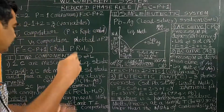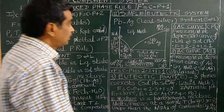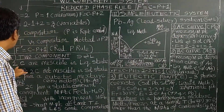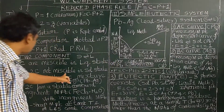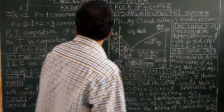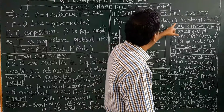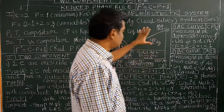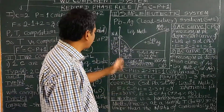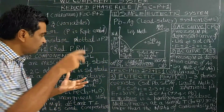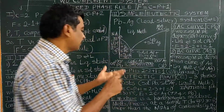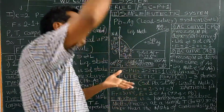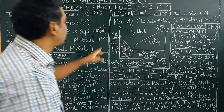Let us now study Type A — the simple eutectic system. The two components are miscible in liquid state but not miscible in solid state, and they form a eutectic mixture. To construct the phase diagram for the lead-silver system, take 100 grams of pure lead and find its melting point by increasing the temperature until it melts, then cool it — the point at which it solidifies is the freezing point. For ice, the melting point equals the freezing point at 0°C. Similarly, pure lead melts at 327°C.